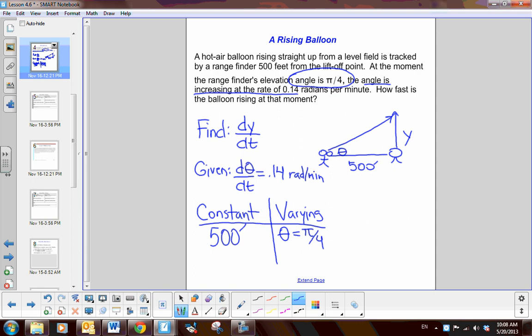So, remember, my goal here is to write an equation and then take the derivative of it in respect to time. Now, if you look here at the original problem, I'm noticing I have a theta and then I have opposite over adjacent. So, what trig function would I use to write an equation? Well, it's going to be tangent. So, it's tangent theta is y over 500. So, if I write this in terms of y, I'd have 500 tangent theta is equal to y.